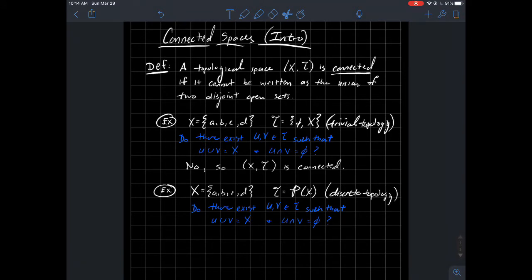To determine if X is connected, you ask yourself the same question in blue. Do there exist two open sets such that you can union the two open sets together to get the whole set back, but those two pieces don't overlap? And if you think about it, there's lots of possible answers for U and V that'll give you the whole set back when you union, and they don't overlap.